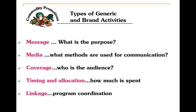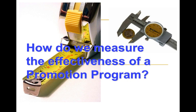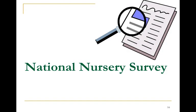How do you plan for that? There are five things to look at: the message — what is the purpose of this promotion activity; the media — what methods of communication you'll use; the coverage — who's the audience; how much time will be spent; and the coordination of those messages. A key challenge in measuring effectiveness is trying to isolate the effects of promotion programs, since many things can change sales — from a recession to other structural issues. Once we econometrically isolate those effects, we can look at how consumers respond to different programs.